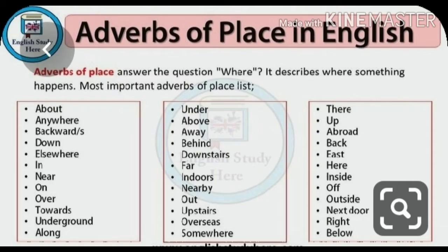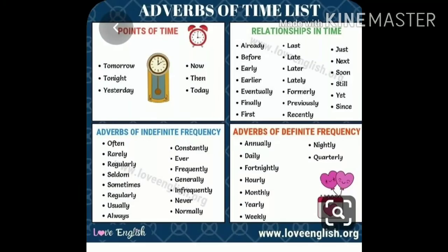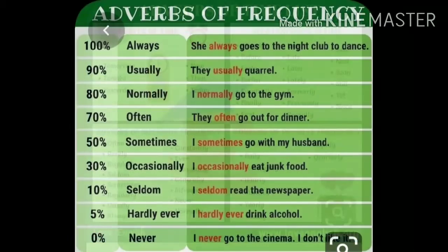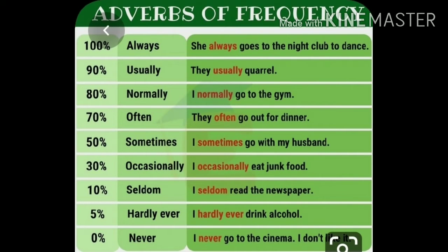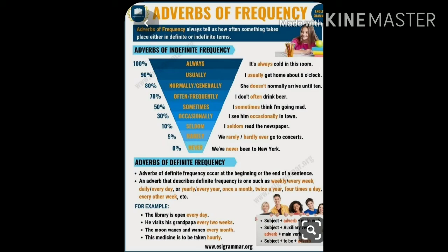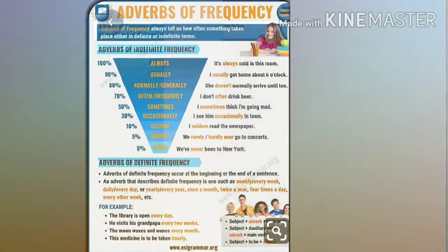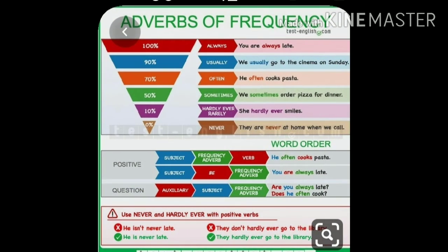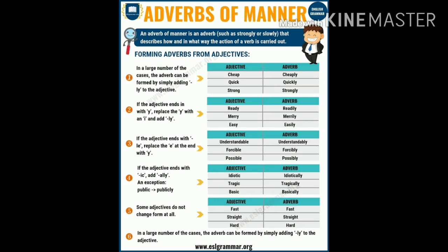1) Adverbs of place — which show where. 2) Adverbs of time — which show when. 3) Adverbs of frequency — it shows how often an action takes place. 4) Adverbs of manner — shows how or in what manner.